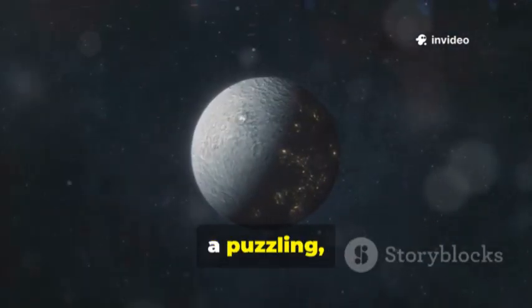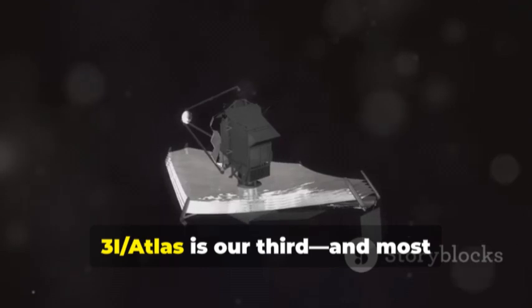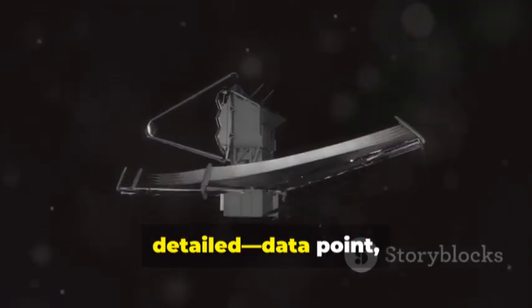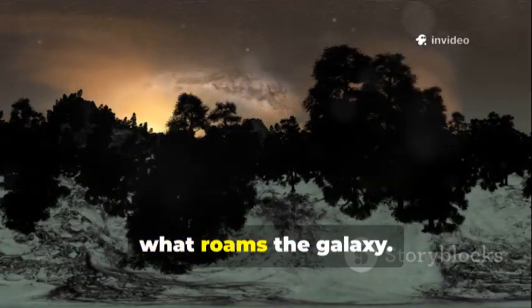Oumuamua, a puzzling inactive object, and Borisov, a comet much like our own. 3i-Atlas is our third and most detailed data point, thanks to Webb. It helps us build a clearer picture of what roams the galaxy.